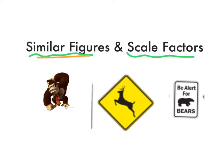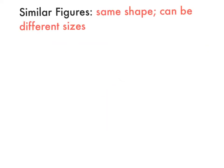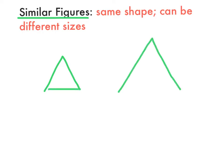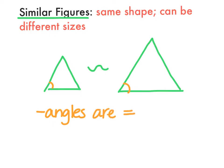This also relates to dilations, which we've been doing in math, because we're enlarging and shrinking. We've talked about similar figures in the past — similar figures are two figures that have the same shape, but they can be different sizes. The symbol for similar figures is a squiggly line. Some important things to know: their angles are always equal, and if you take corresponding sides — the sides that match up — they are proportional.